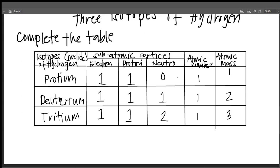To get the atomic mass, we add protons and neutrons. So the mass numbers are one, two, and three for protium, deuterium, and tritium.